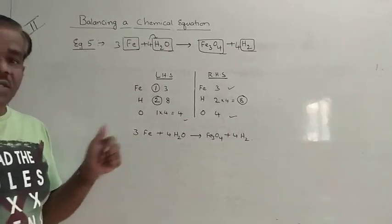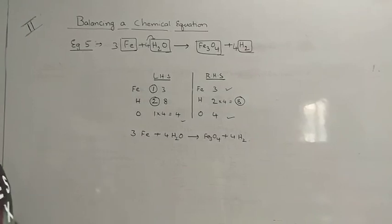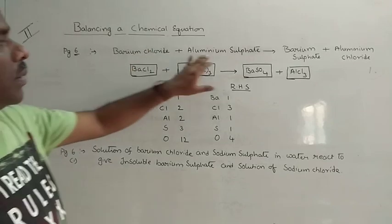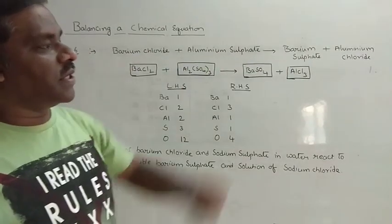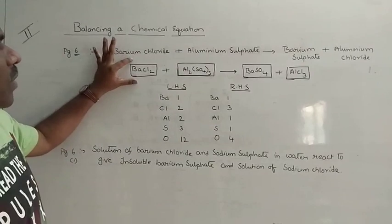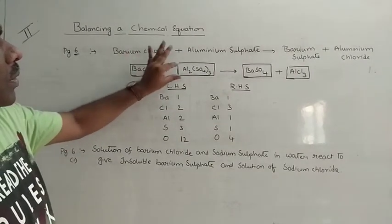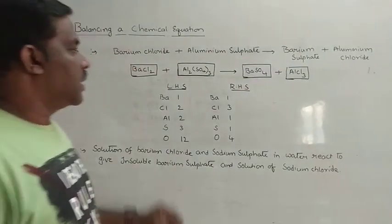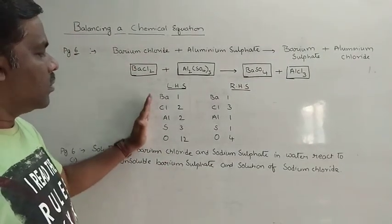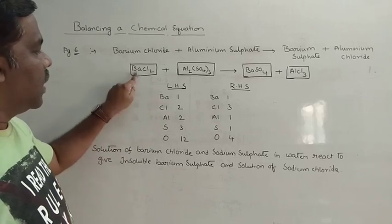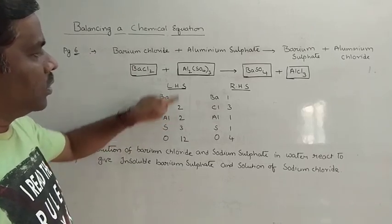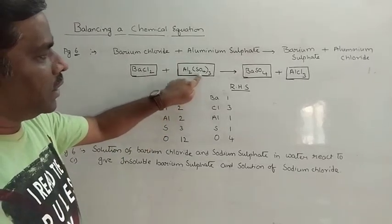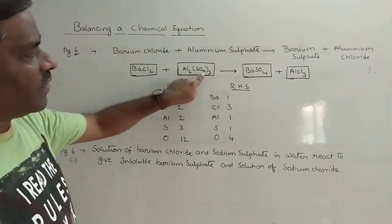Let us go to one more example — the last one. Here we have barium chloride combining with aluminium sulphate to form barium sulphate and aluminium chloride. The formula is: BaCl2 plus Al2(SO4)3 gives rise to BaSO4 plus AlCl3. On the left-hand side: barium 1, chlorine 2, aluminium 2, sulphur 3, and oxygens are 4 times 3 equals 12. On the right-hand side: barium 1, chlorine 3, aluminium 1, sulphur 1, and oxygens 4.